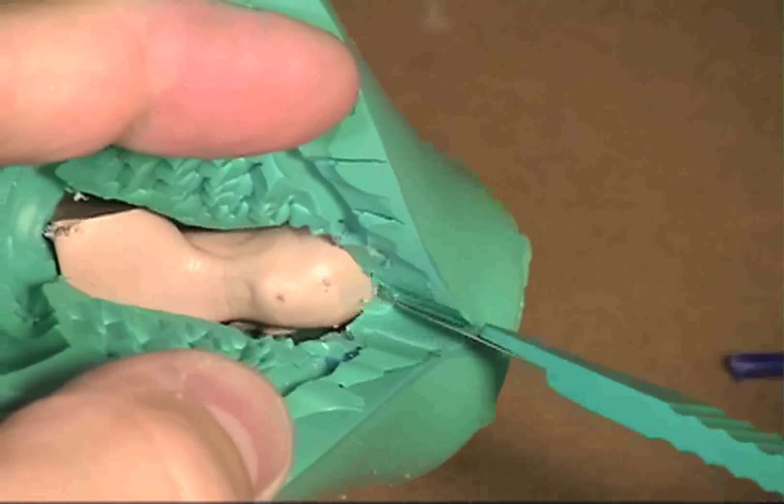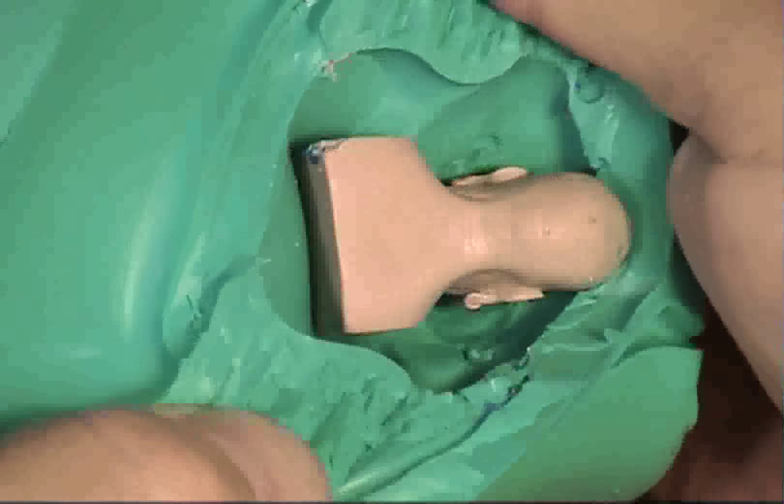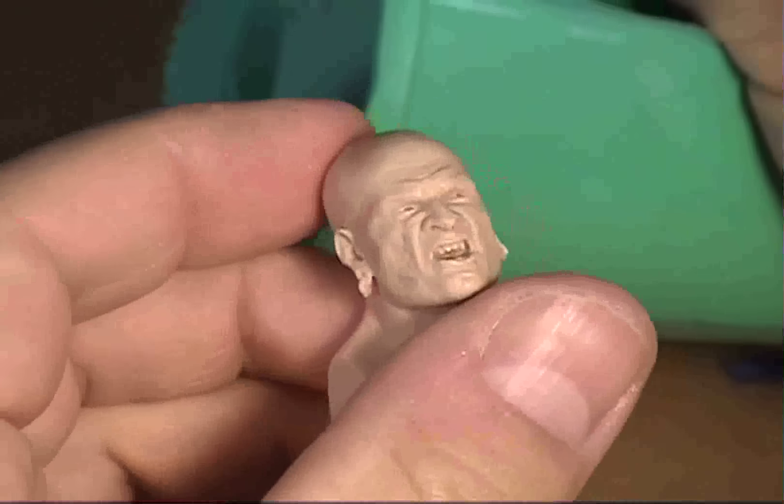The reason why I cut the zigzag pattern is so that the mold will key together perfectly and leave a real nice seam edge when I make my casting.